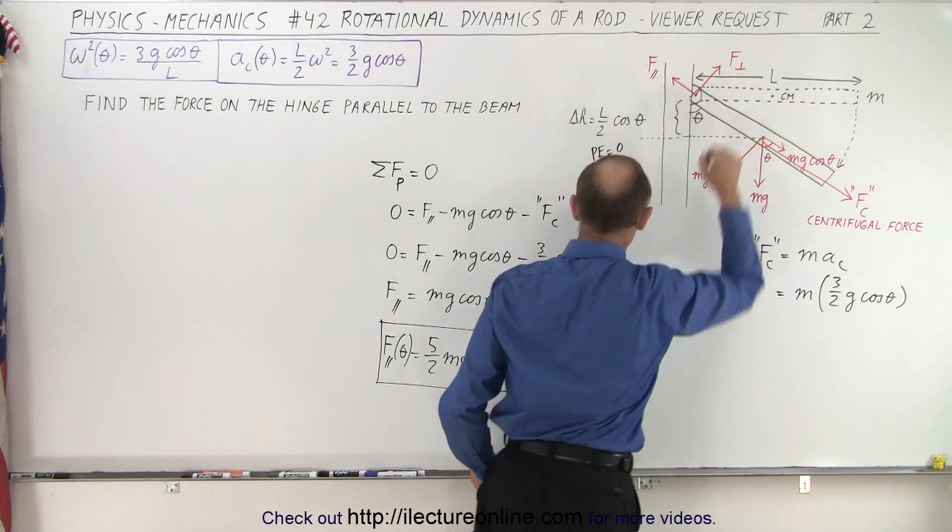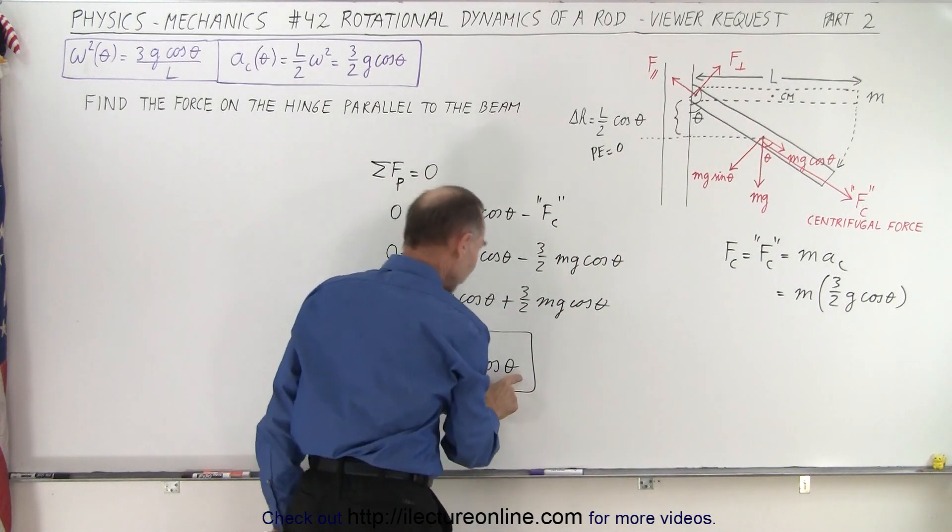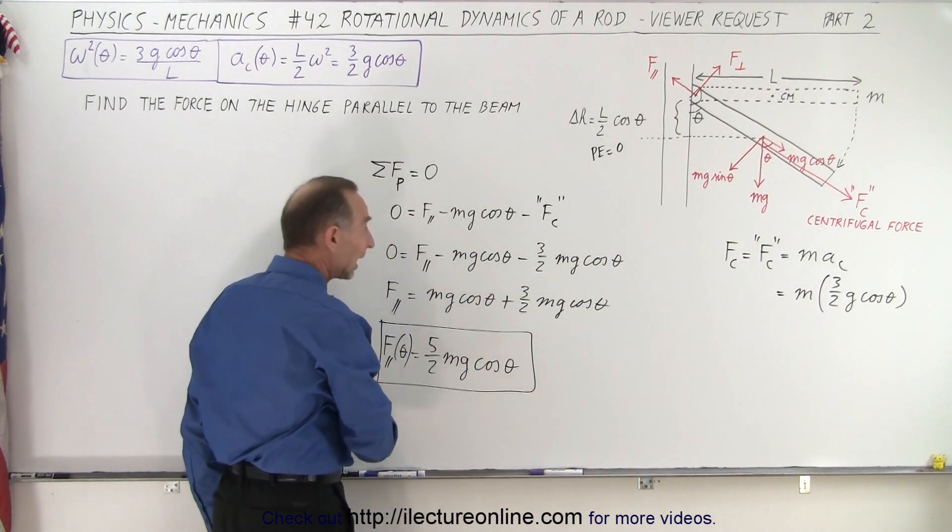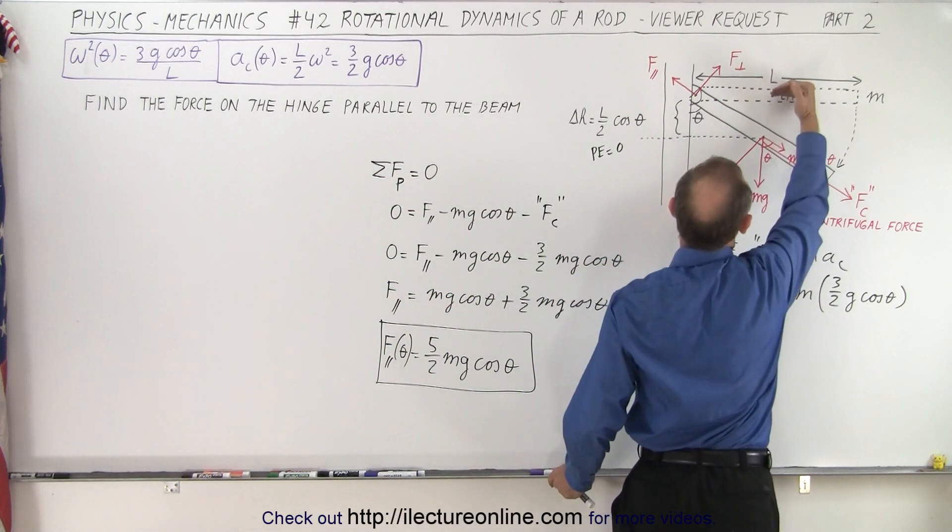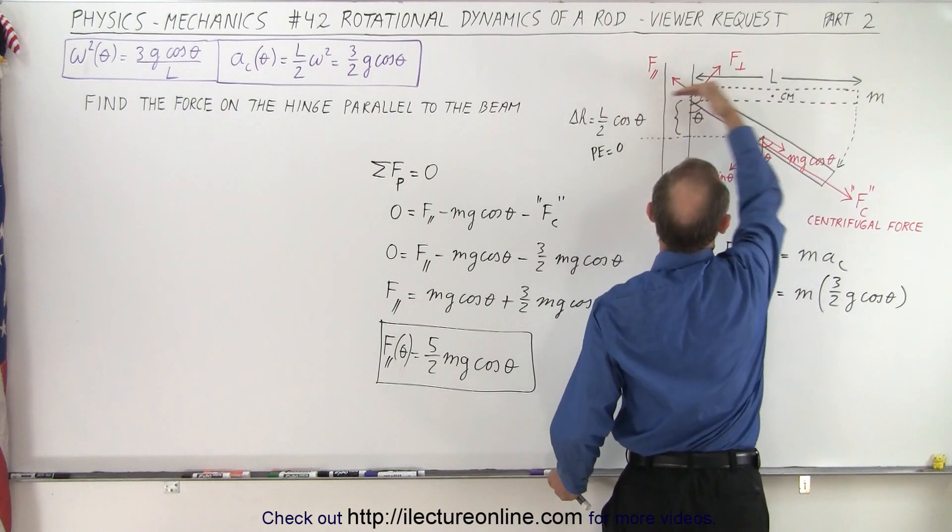So in the beginning position of the beam, cosine of 90 is zero, and so we get zero force in the direction parallel to the beam, which would be the case if the beam is like this. There's no force on the pin in this direction.